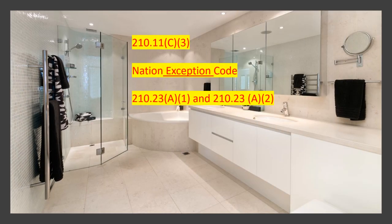All right, when we flip over one page, I first want to read 210.23(A) and then we'll read sections one and two. Section A says: a 15 or 20-amp branch circuit shall be permitted to supply lighting units or other utilization equipment as long as it complies with A1 and A2. I want to note that today we're specifically talking about a bathroom, but this applies to any circuit in general — it's allowed to run lighting as long as it hits these two points.